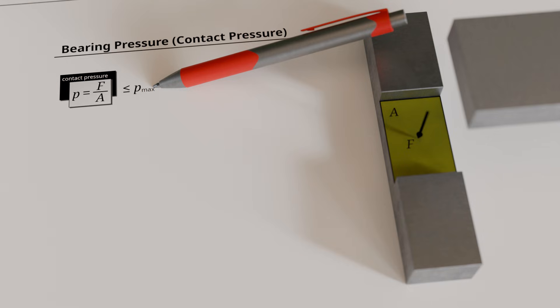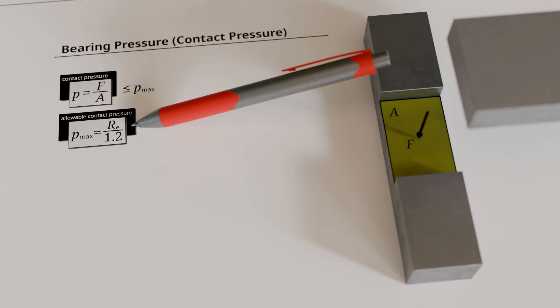For ductile materials such as steel, the allowable bearing pressure can be estimated from the yield strength for preliminary calculations. As a guideline for static loading, the allowable bearing pressure should be at least a factor of 1.2 below the yield strength. For cast iron, a higher safety factor should be selected.